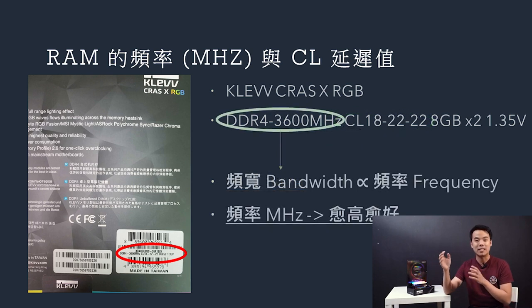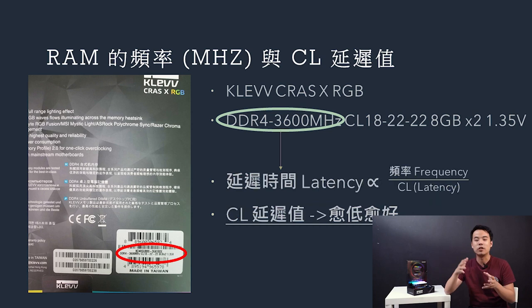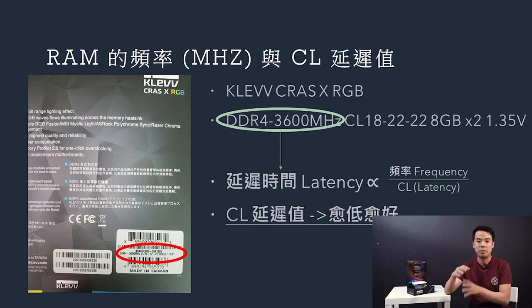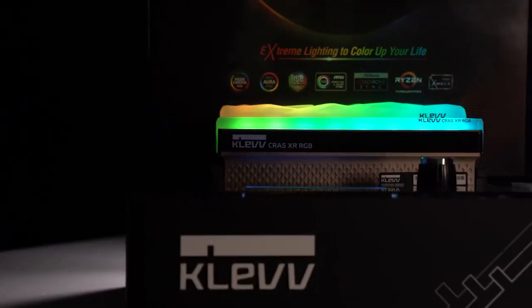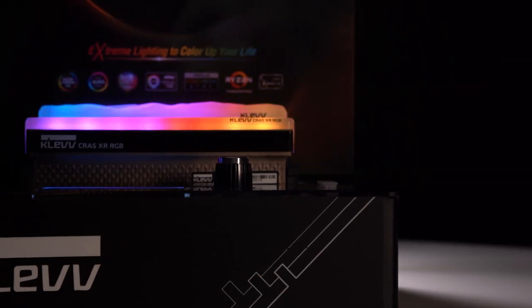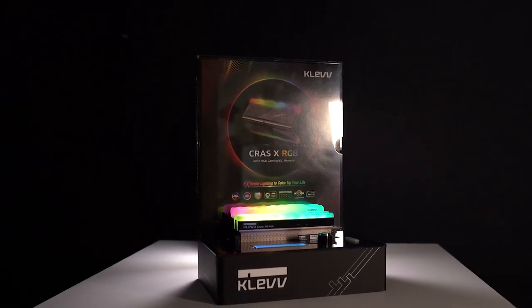The frequency of RAM matters. Higher frequency will generally perform better, but latency should also be compared alongside frequency. For example, the most basic RAM is DDR4 2666 CL19, while a higher-end RAM like a gaming kit may run at DDR4 3600 CL18, offering better overall performance.